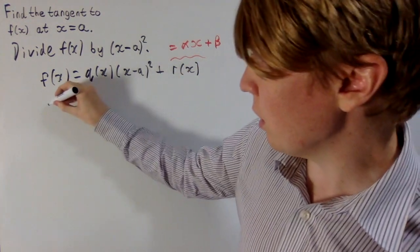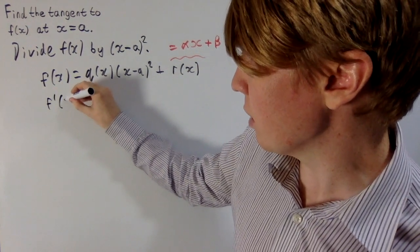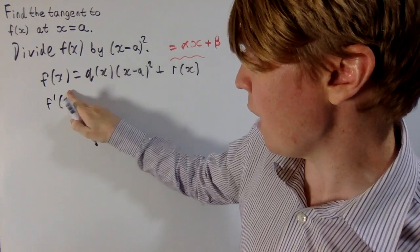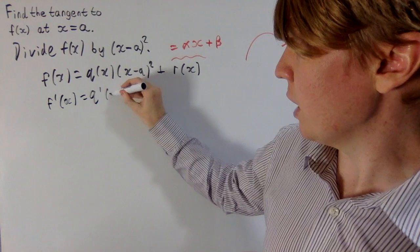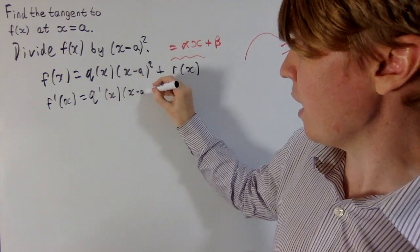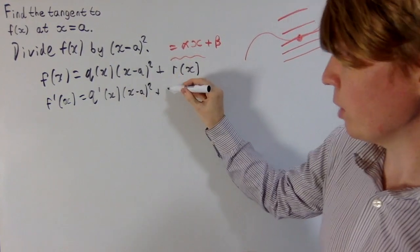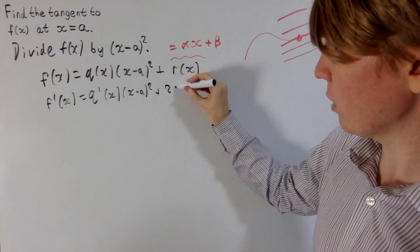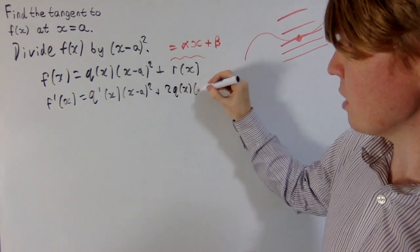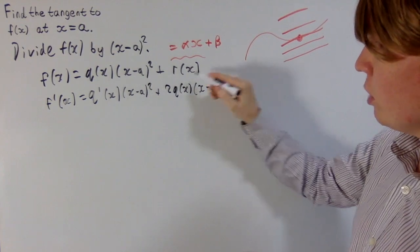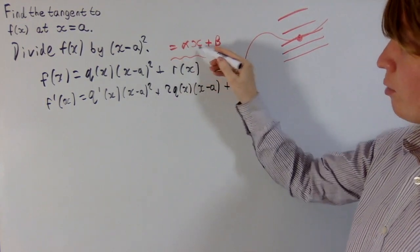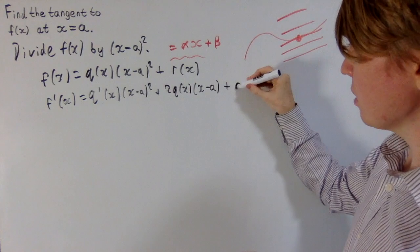So towards calculating the gradient, let's, first of all, we need to find, so we'll use some calculus here, so f dash of x, use the product rule here, you get q dash of x multiplied by x minus a all squared, and then plus, when you differentiate this, you get a factor of 2, q of x stays the same, and then x minus a just to the power of 1, and then when you differentiate r of x, remember this is just alpha x plus beta, so you just get plus alpha.